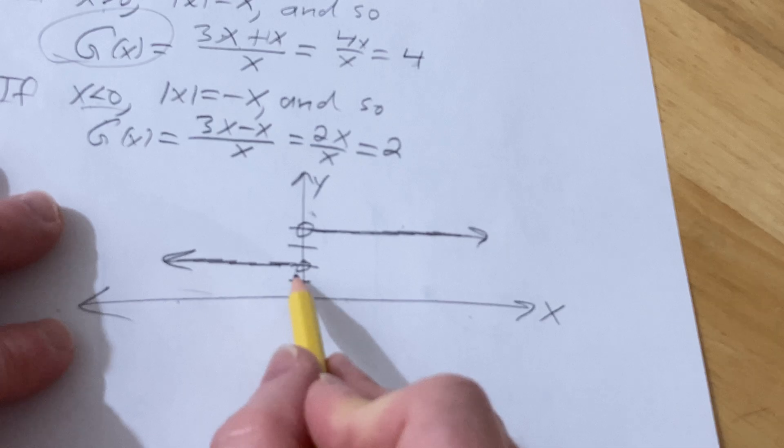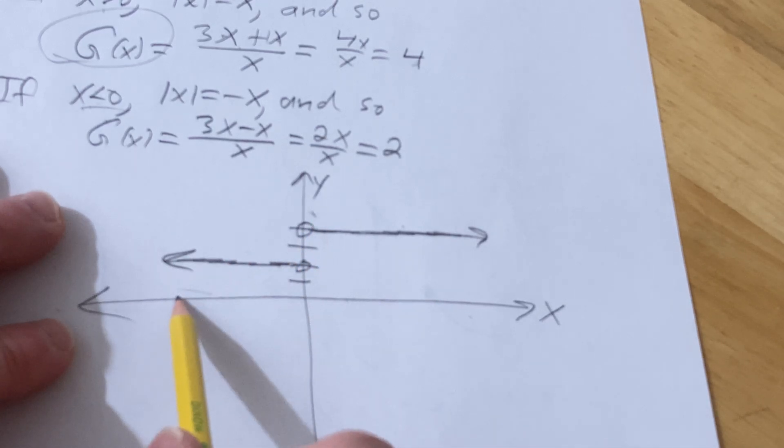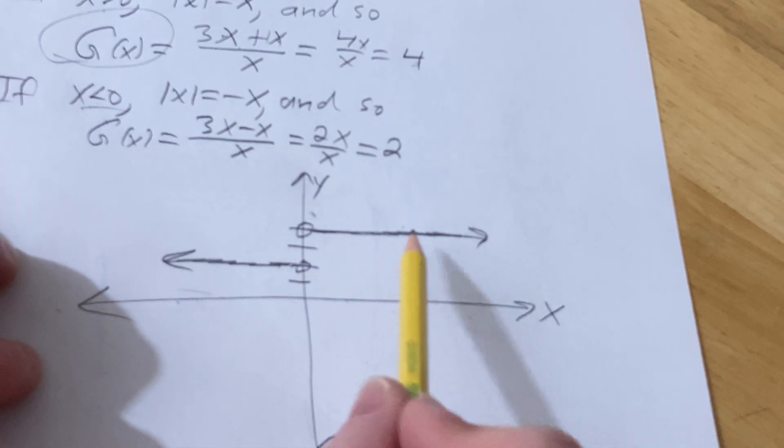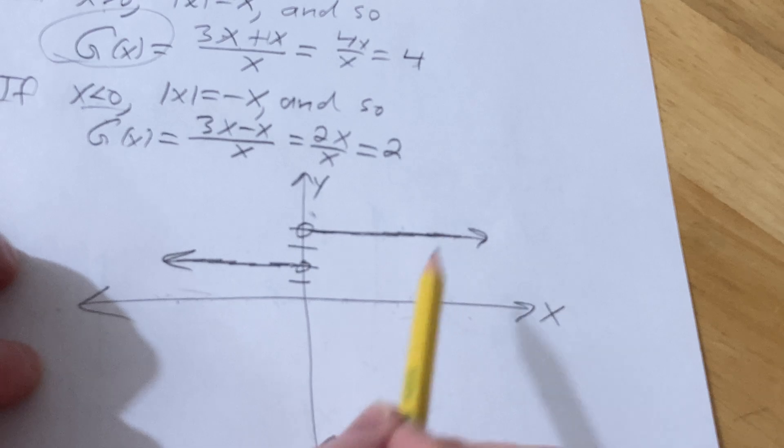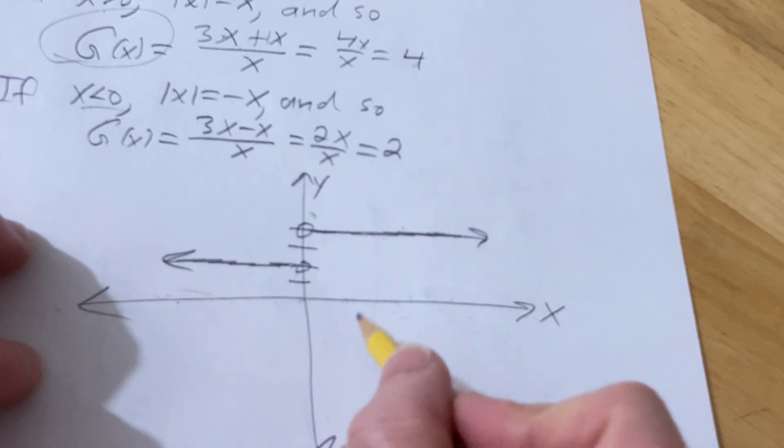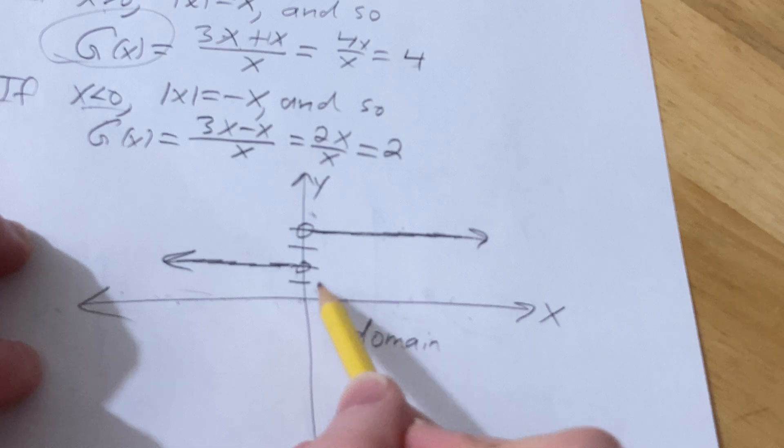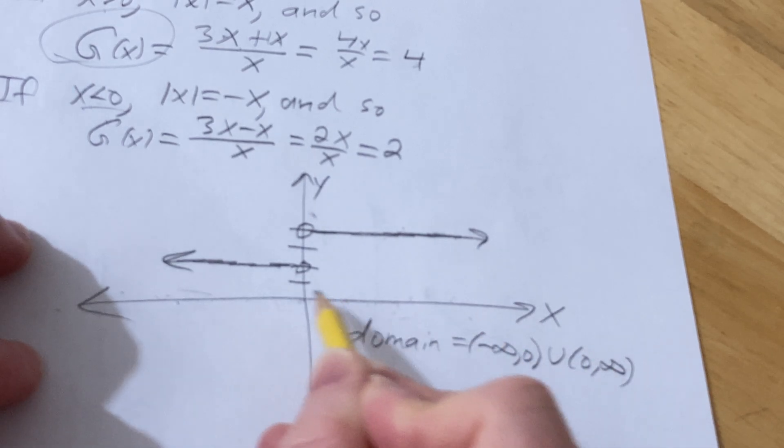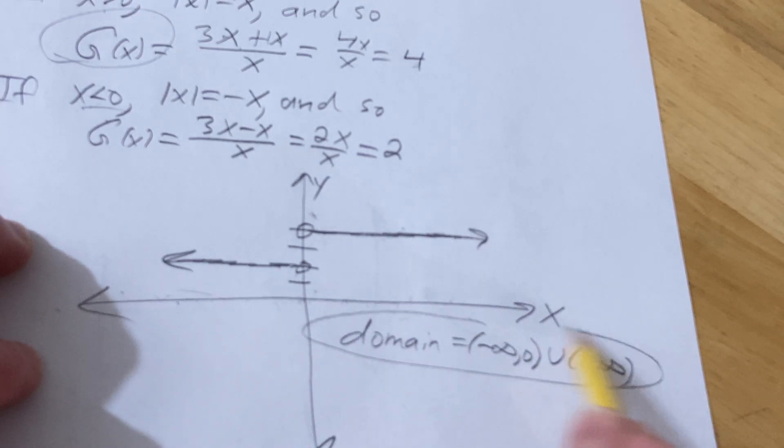The domain is everything except 0. The domain is the set of all x's that give you y values. Every x you pick on the x-axis gives you a y value, except 0. 0 does not give a y value because I have holes. So the domain is negative infinity to 0, union 0 to infinity.